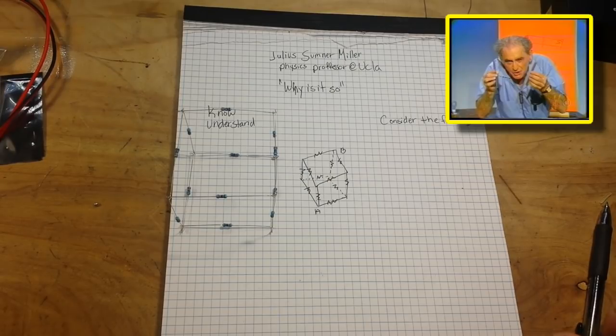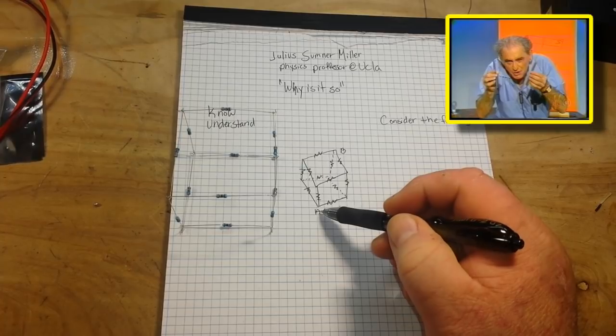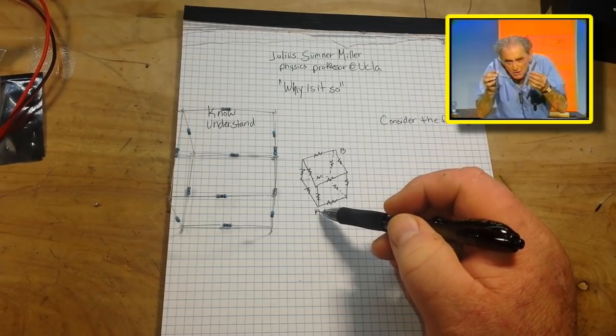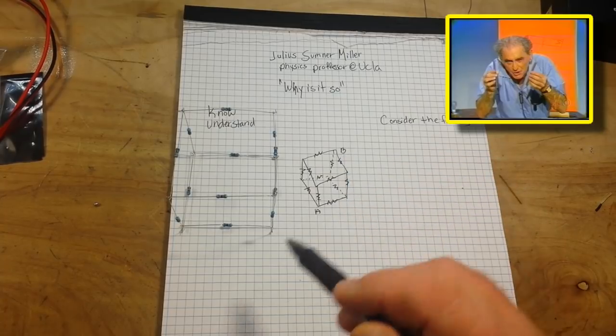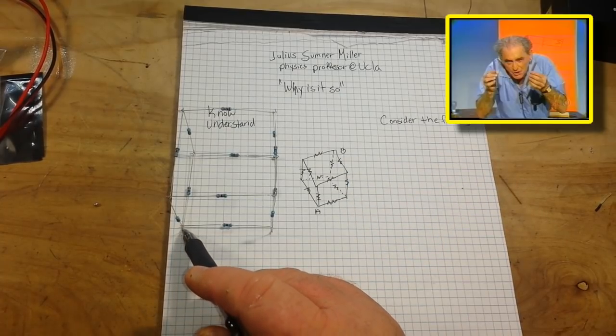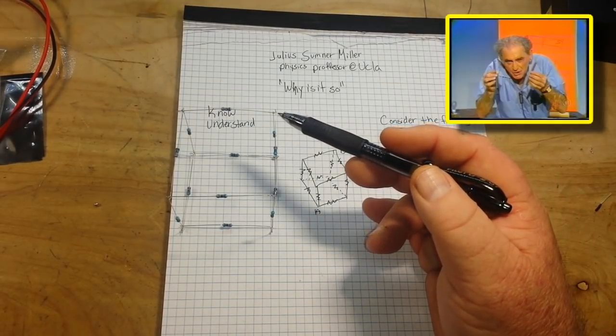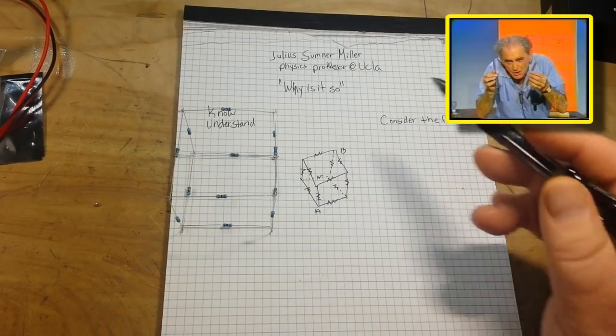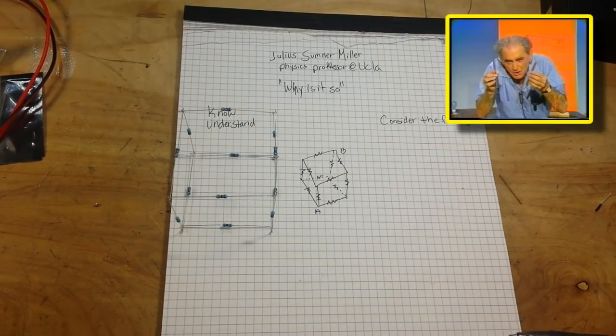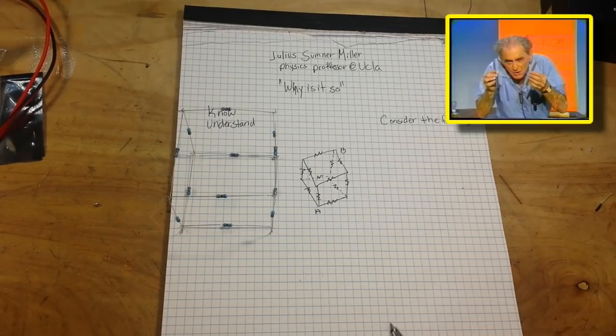So what we want to do is find the total ohmic resistance between two points that are diagonally opposed: A and B. We could say this point here is A, down on the bottom front left, and this point up here is B, on the top back right. There are three ways to do this - I'm not going to tell you what they are.